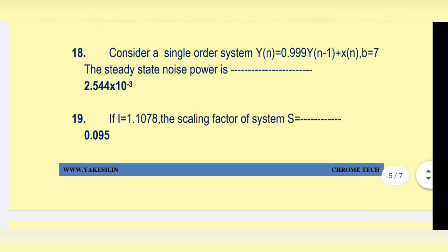Consider a single order system y(n) = 0.99·y(n−1) + x(n), with b equal to 7. The steady state noise power is 2.544 × 10^(−3).